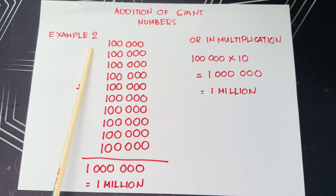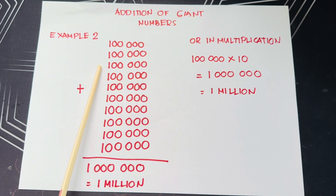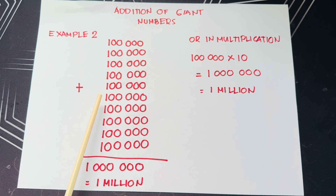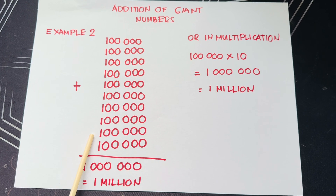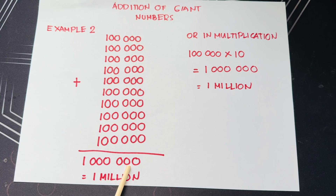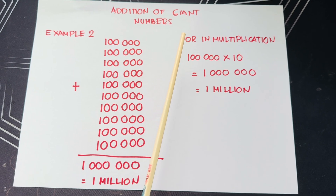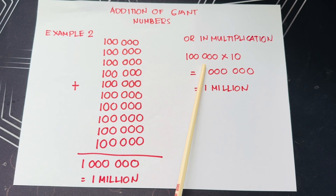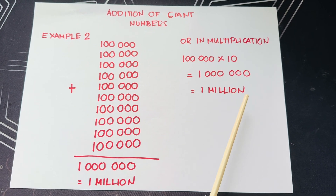Example number 2: If we add 10 of 100,000, it will result to 1,000,000. Or, in multiplication, 100,000 times 10 is equals to 1,000,000.